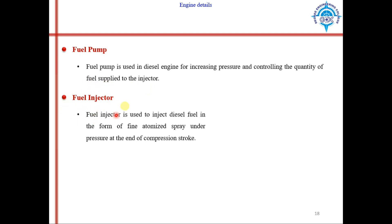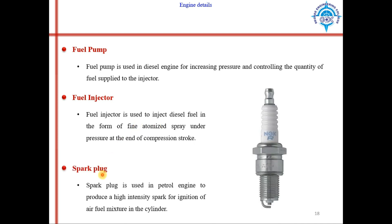The fuel injector is used to inject diesel fuel in the form of a fine atomized spray under pressure at the end of compression. The diesel fuel is converted into a small atomized spray so that efficient burning can take place. The next component is the spark plug, used only in petrol engines. The spark plug produces a high intensity spark for ignition of the air-fuel mixture in the cylinder — producing a spark in this space to burn the air and petrol mixture.